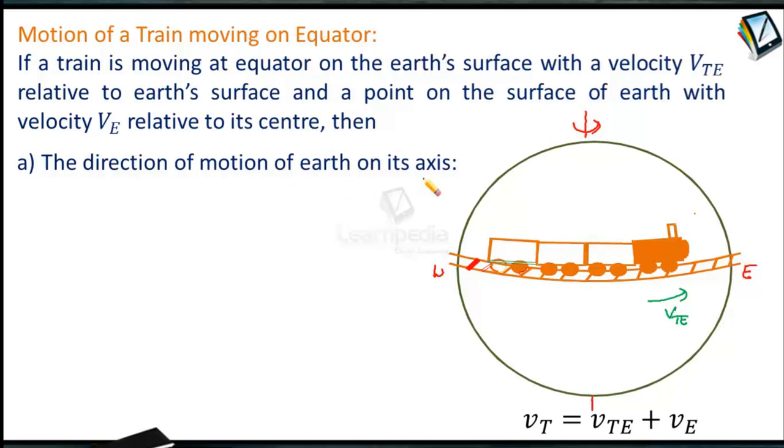The direction of motion of the earth on its axis - if the train is also moving in the direction of motion of earth, then velocity of train with respect to the center will be velocity of train with respect to earth plus the velocity of earth. VT = VTE + VE. It is in the same direction, so it gets added up.